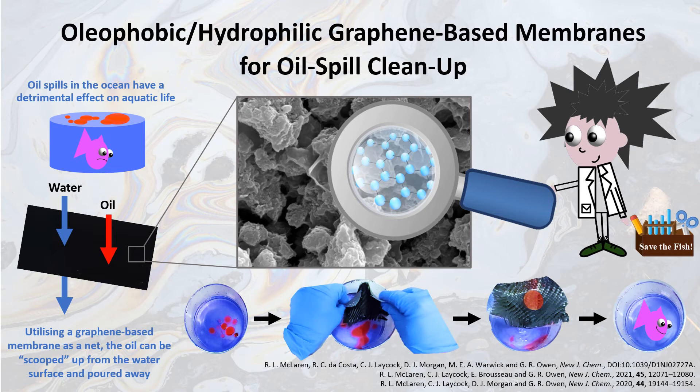The presence of graphene within these membranes has several advantages. It provides them with large surface areas, high strength and flexibility, originating from the honeycomb structure of carbon seen here within the magnifying glass. These membranes can be synthesised really easily by simply mixing the graphene material with the necessary polymers in water and allowing them to dry in air. The membranes can then be used as they are, or they can be coated upon various substrates.